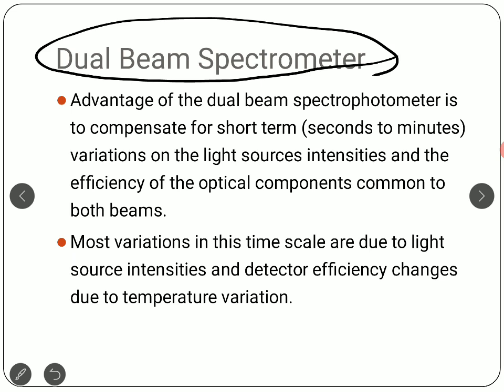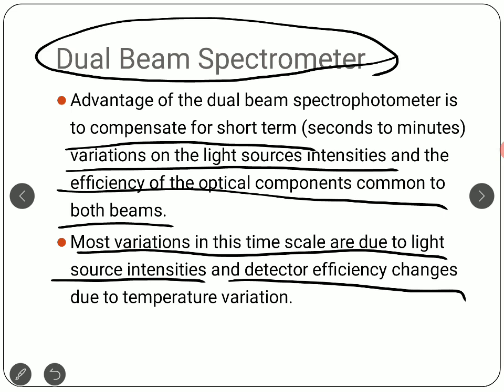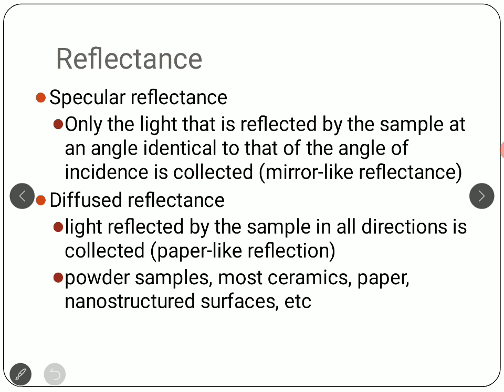The dual beam spectrometer has two beams and offers significant advantages. It compensates for short-term variations in light source intensity over the path from source to sample, and accounts for efficiency changes in optical components common to both beams. Most variations on this timescale are due to light source intensity and detector efficiency changes caused by temperature variation, so temperature is also an important factor to consider during measurements.